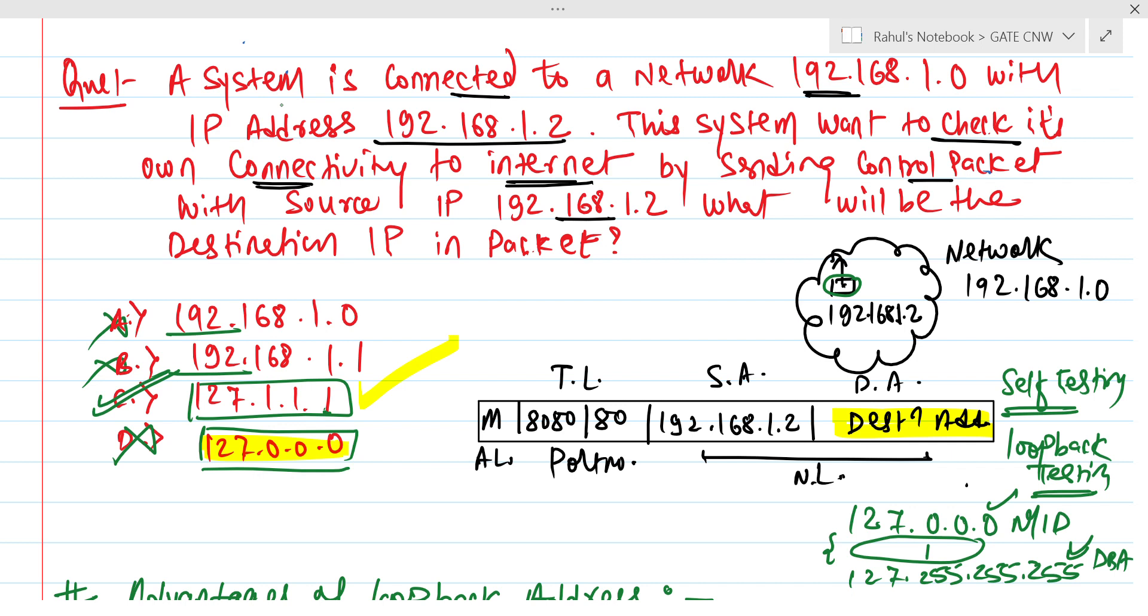Let's say if nothing was given here or something else was given like 189 dot something. In that case, we can use it. But here, if this is the thing, we have to give option C the most priority. We have to prioritize option C. Getting into the concept, this is the thing.